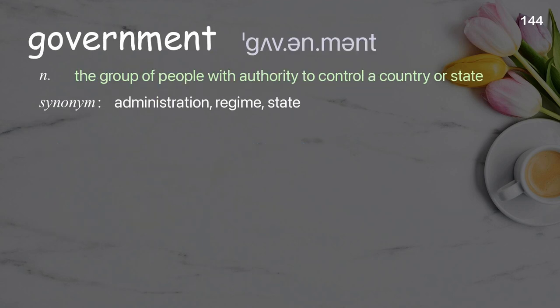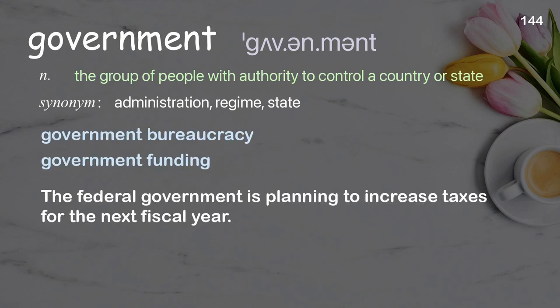Government. The group of people with authority to control a country or state. The government is planning to increase taxes for the next fiscal year.